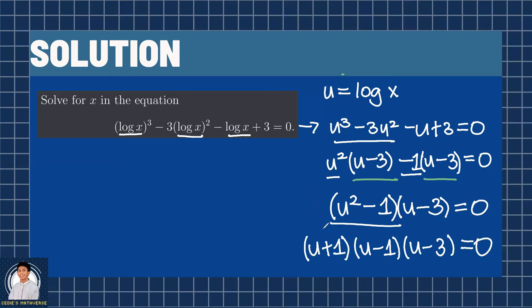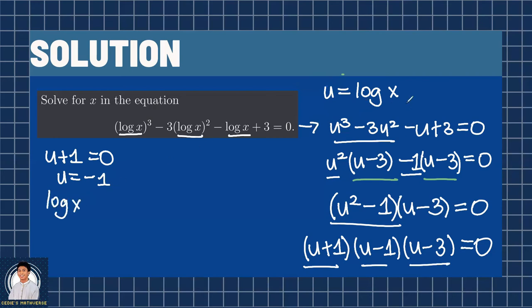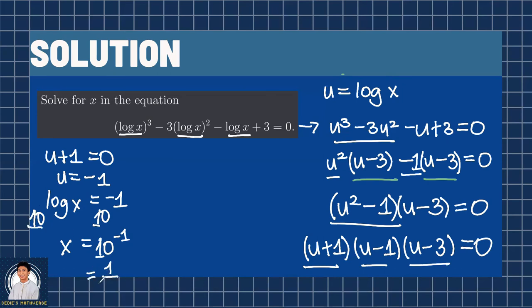We can set each factor to 0. So we have u plus 1 equals 0, giving u equals negative 1. And since u is equal to logarithm of x, we substitute back: logarithm of x equals negative 1. Then, raising both sides by 10 — since the standard logarithm is base 10 — we get 10 raised to logarithm x, which is x, equals 10 raised to negative 1, or 1 over 10.